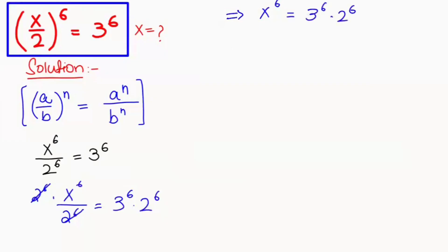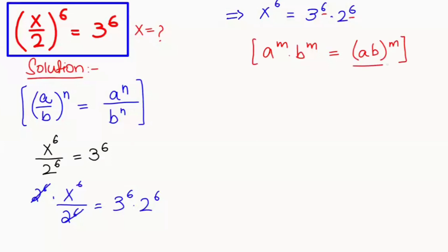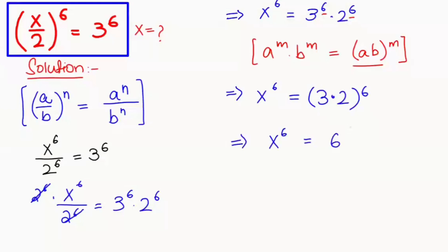Next I will apply another exponential rule: a to the power of m times b to the power of m can be written as (a times b) to the power of m. So here we have the common power, and we can write x to the power of 6 equals (3 times 2) to the power of 6, which equals 6 to the power of 6.